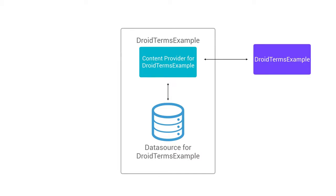Now, what's actually going on under the hood is that there's a SQLite database, and the content provider is just providing managed access to that database. But from a developer's point of view, who's using Droid Terms Example's content provider, you don't actually need to know that this SQLite database even exists, because you don't have the permission to — and you never will be — accessing the SQLite database directly.